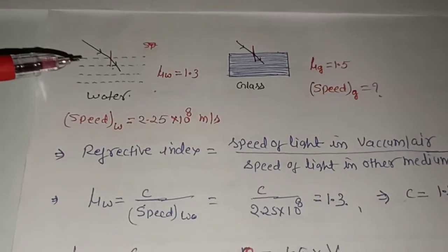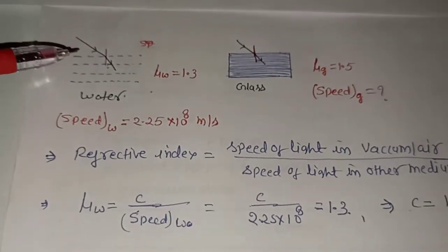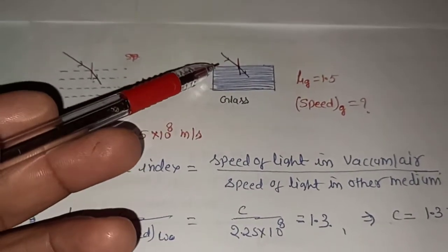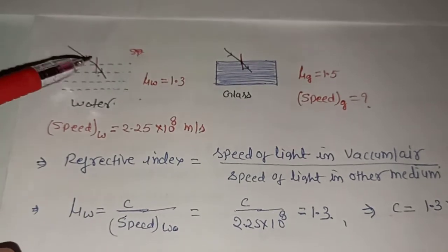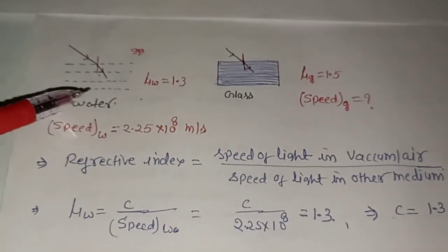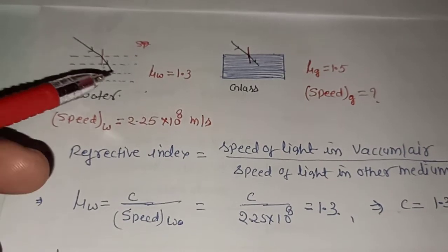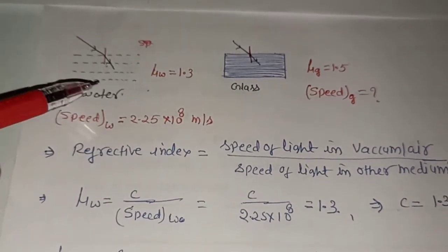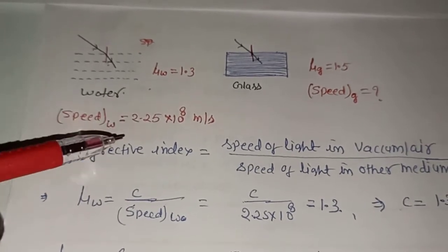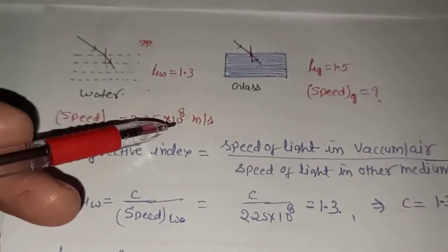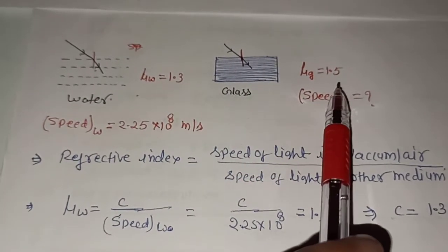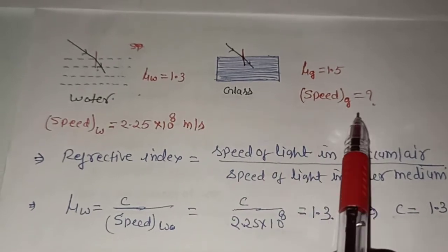In this problem, refraction from first medium to second medium is given in two cases. The first medium is air in both cases. The second medium is water in the first case and glass in the second case. The refractive index of water is given as 1.3, and the refracted speed of light in water is given as 2.25 × 10⁸ m/s. In the second case, the refractive index of glass is given but the speed of light in glass is not given.